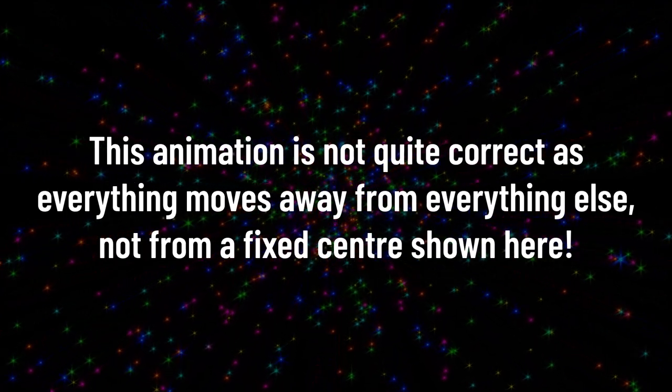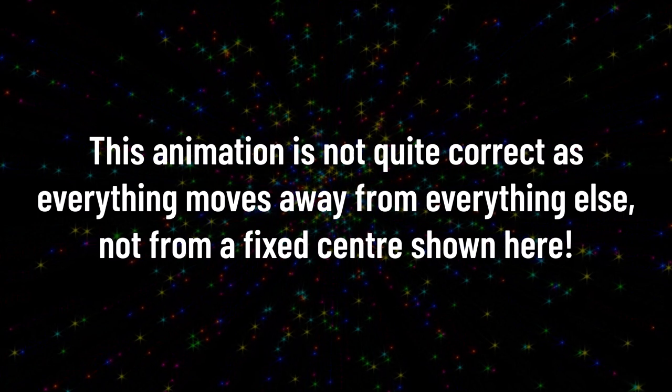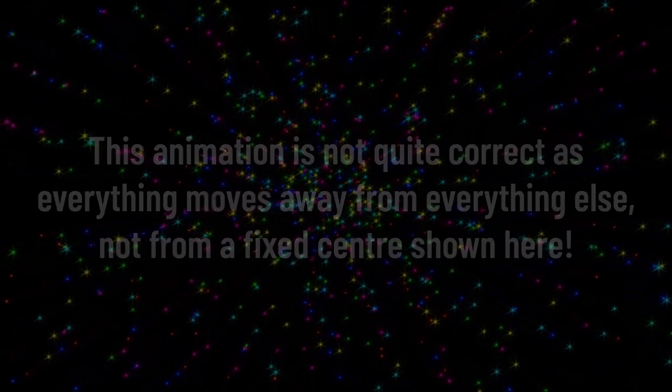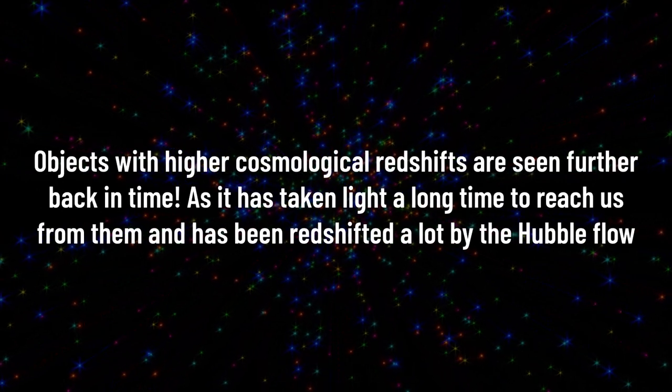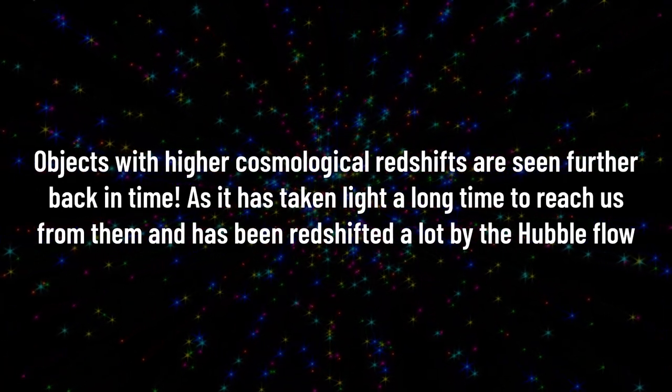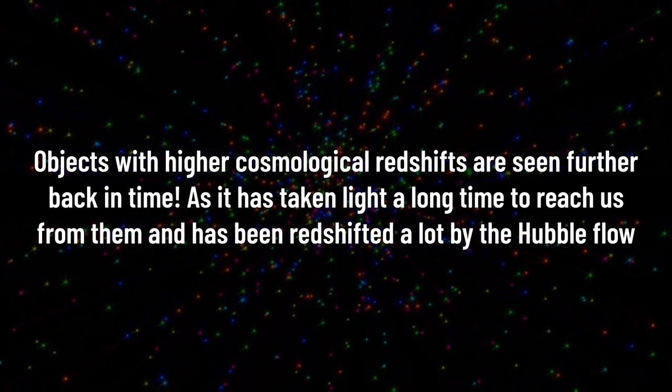The redshifting of light associated with the Hubble flow is known as cosmological redshift. This redshift can be used by cosmologists to represent time as things that are far away are redshifted more, and the further away they are, the further back in the past the light from them was emitted. Therefore, things with larger cosmological redshifts, we are seeing them further back in the past.